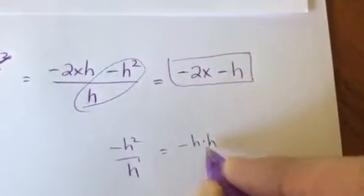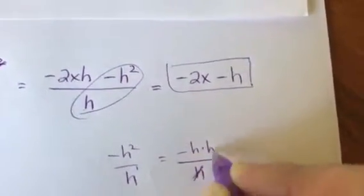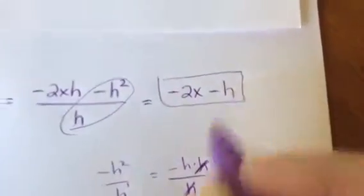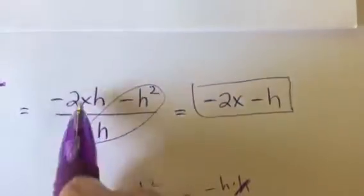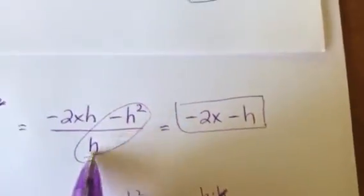Or you could think h squared means h times h. Do you see how one of those would cancel? So I'm still left with h. Okay, so just make sure, be careful when you simplify here, that both terms are divided by h. And that's it.